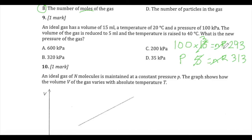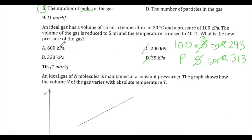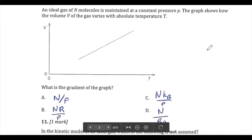Remember that in a multiple choice Paper 1 exam, calculators are not allowed in physics. So you estimate and choose the most reasonable answer. Temperature is increasing so pressure must increase, ruling out 35 and 200. 600 kPa would be twice 300, but the temperature has not doubled. The only reasonable answer is 320 — you approximate rather than calculate exactly.